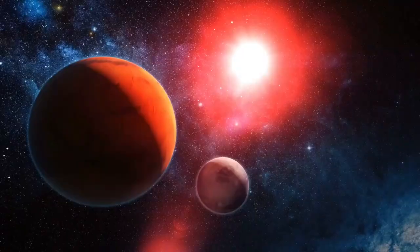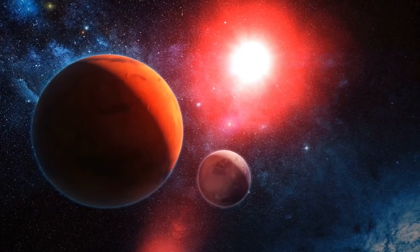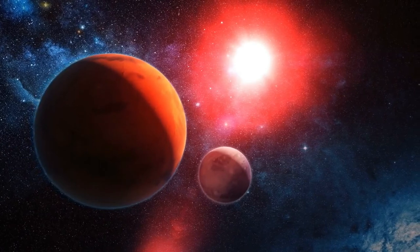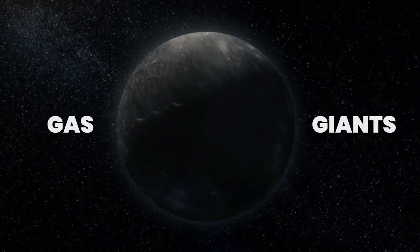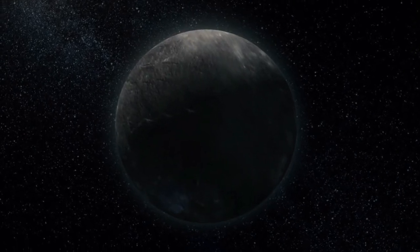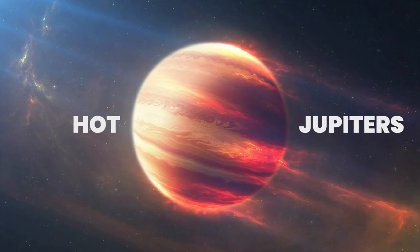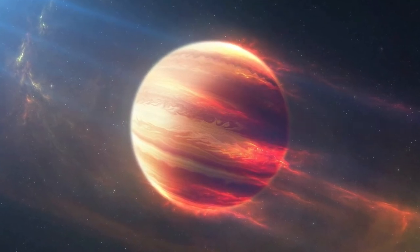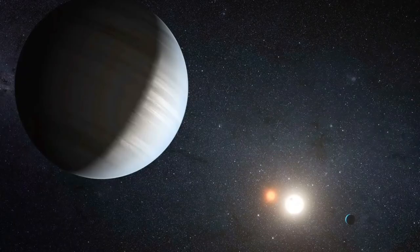Kepler not only focused its efforts on finding potentially habitable planets. In fact, the bulk of its discoveries were strange worlds, not suitable for life but fascinating nonetheless, like the gas giant planets composed mostly of gases such as hydrogen and helium with a relatively small rocky core, also known as hot Jupiters. These planets orbit extremely close to their parent stars and are abundant in Kepler's data.